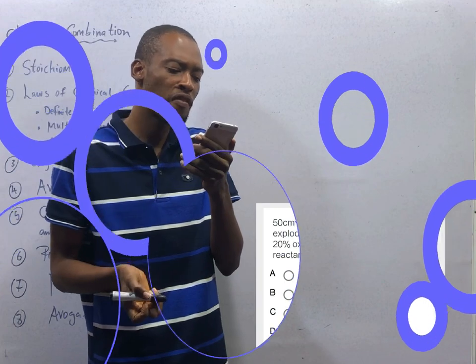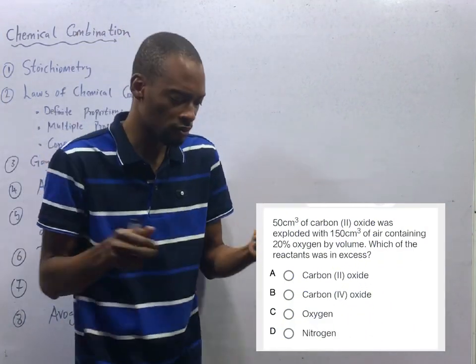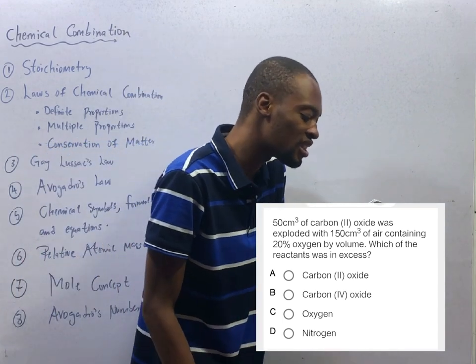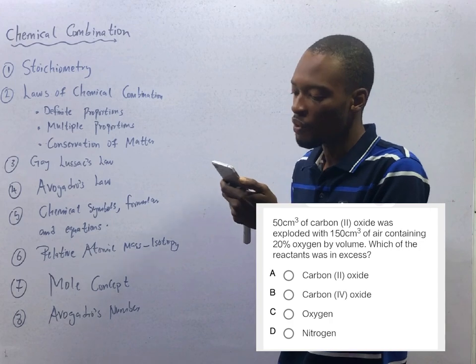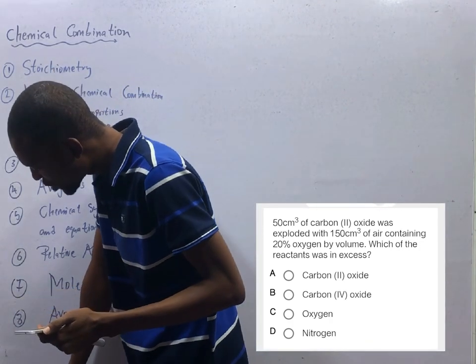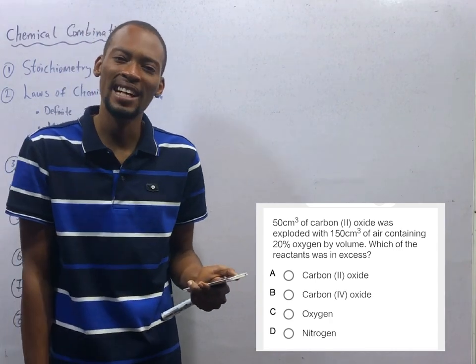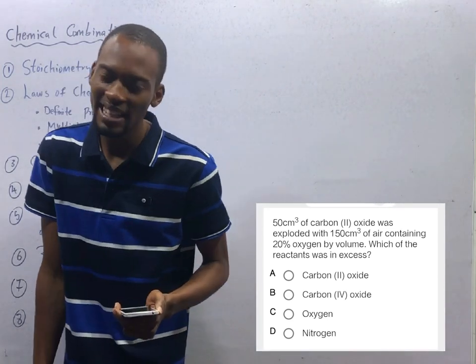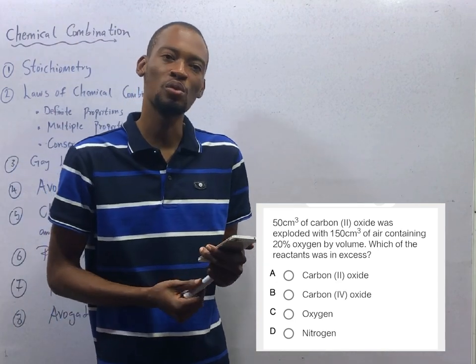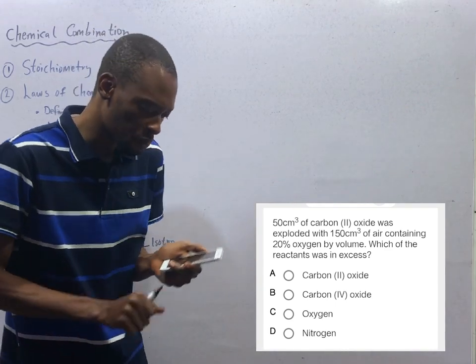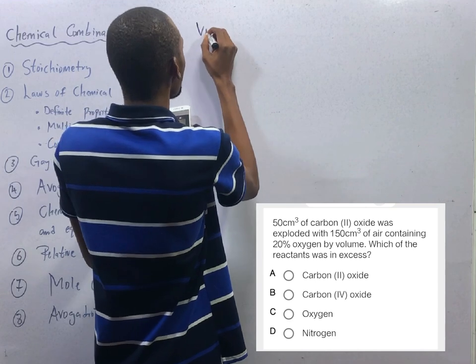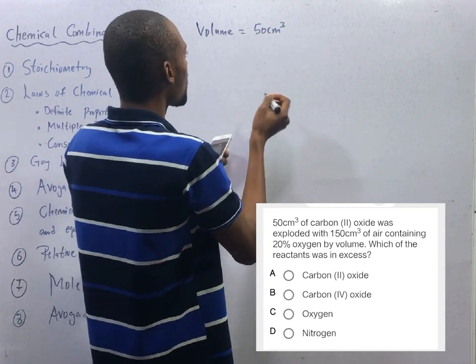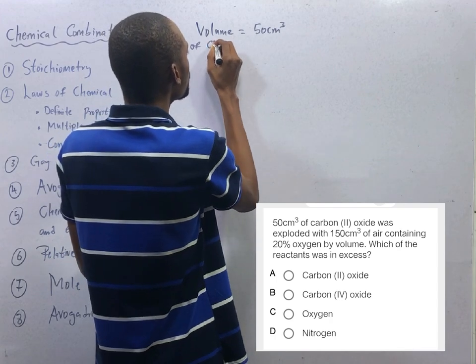50 cm³ of carbon (II) oxide was exploded with 150 cm³ of air containing 20% oxygen by volume. Which of the reactants was in excess? As little as this question is, it requires a law. 50 cm³ of carbon (II) oxide. They did not say carbon-3 oxide or carbon-4 oxide. They said carbon (II) oxide. And what is cm³? Cm³ speaks of volume. Which means volume of carbon (II) oxide, volume is equal to 50 cm³. And volume of what? Of CO. Carbon (II) oxide is CO, also referred to as carbon monoxide.